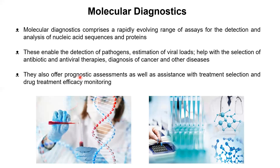Knowing the pathogen helps in the selection of the appropriate antibiotic or antiviral. When you detect if it's a gram-positive or gram-negative bacterium, you can devise a suitable antibiotic and find out which spectrum of antibiotics it resists or is susceptible to. For viral infections, the viral load determines the dosage — the more the viral particles, the higher the dosage needed.